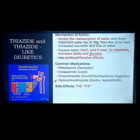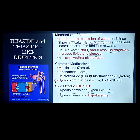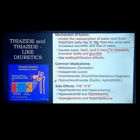Side effects can be remembered by the AGED mnemonic: hyperlipidemia because of lipid retention; hyperuricemia because of increased uric acid concentration; hypercalcemia because of calcium retention; hypokalemia because potassium is excreted; hyperglycemia because glucose is retained; and hyperlipidemia because lipids are retained.